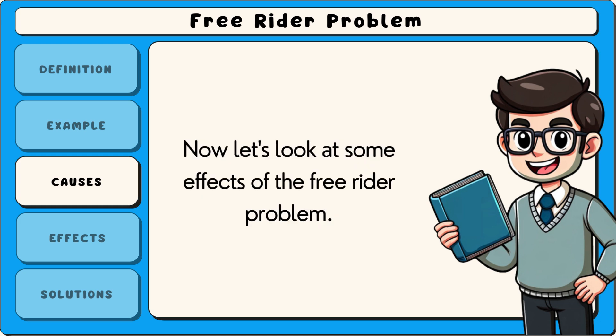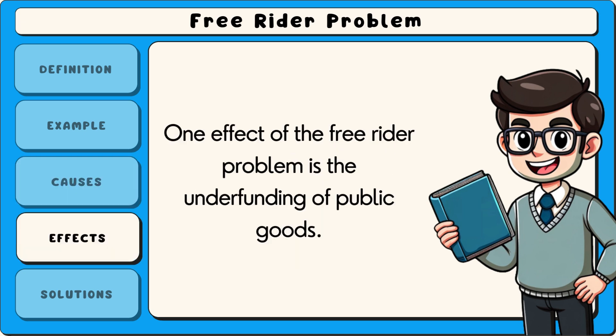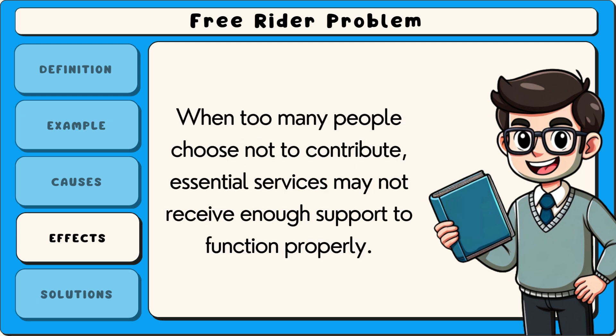Now let's look at some effects of the free rider problem. One effect is the underfunding of public goods. When too many people choose not to contribute, essential services may not receive enough support to function properly.